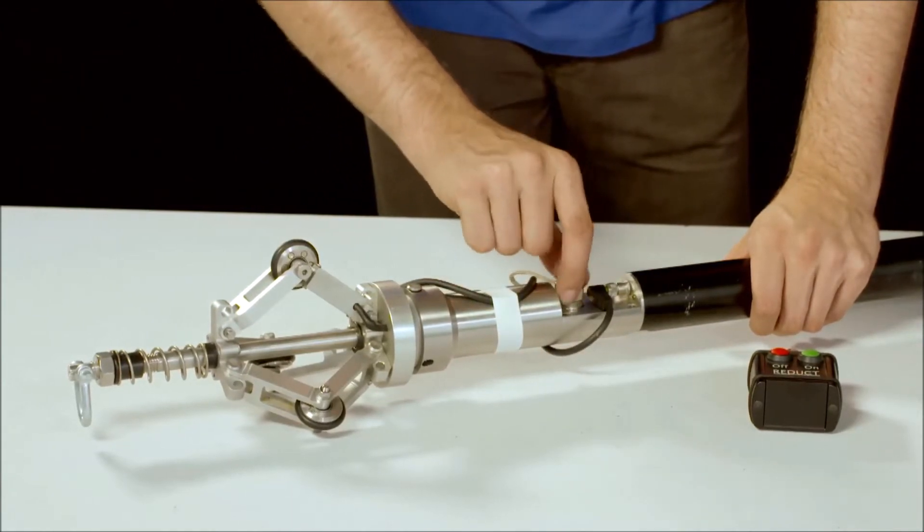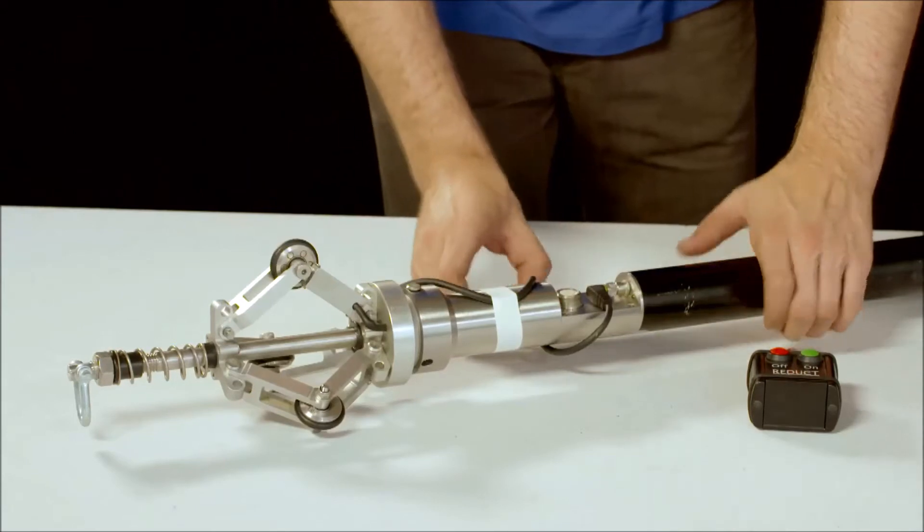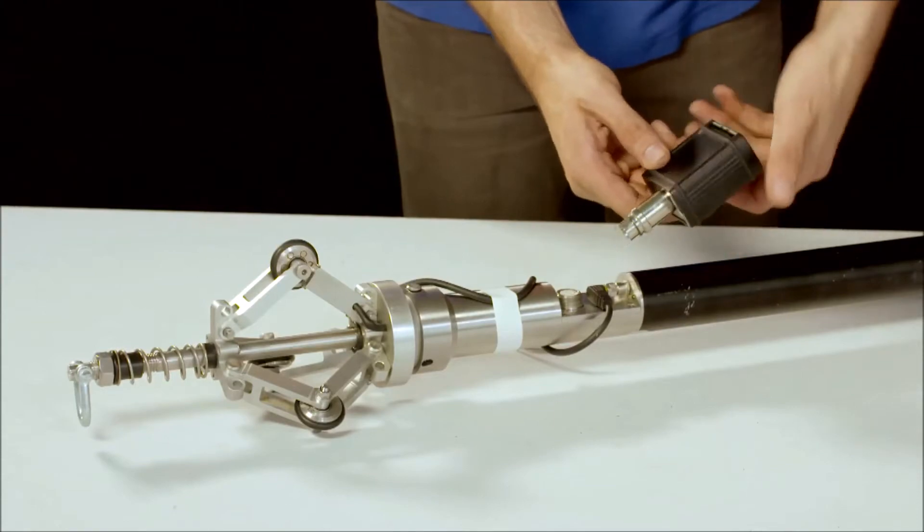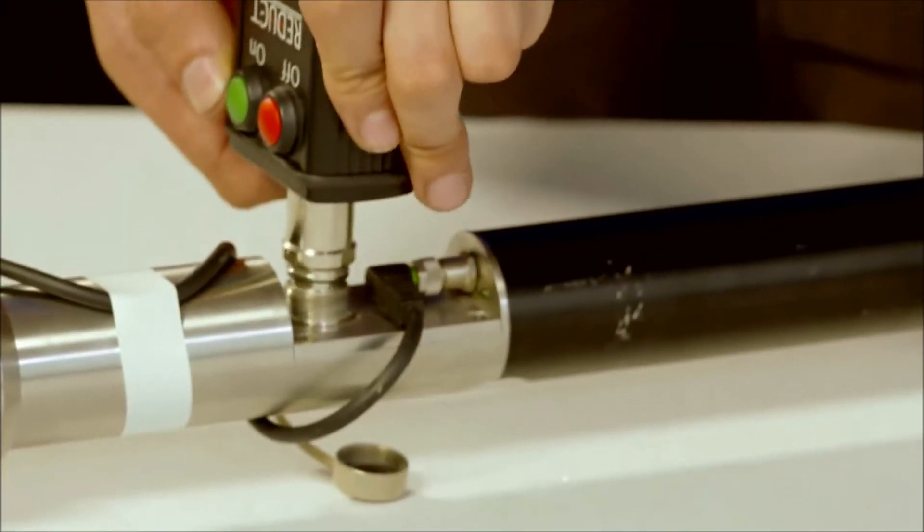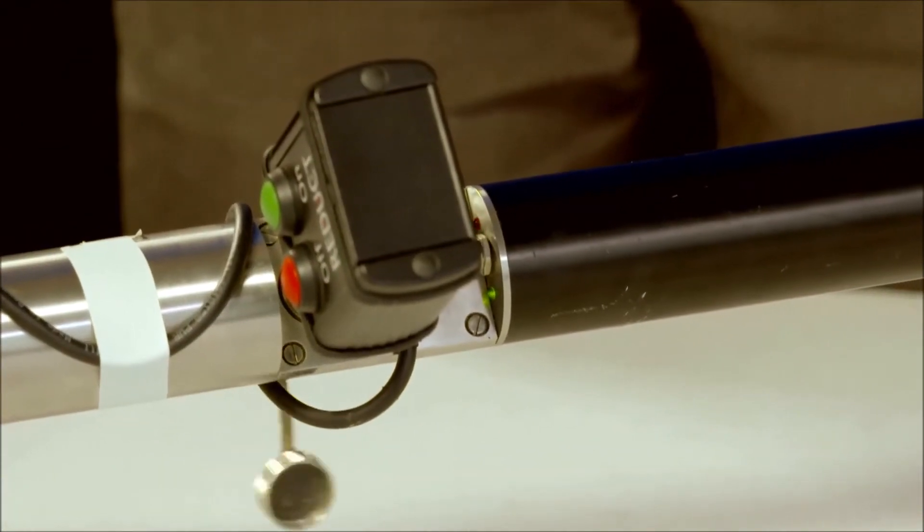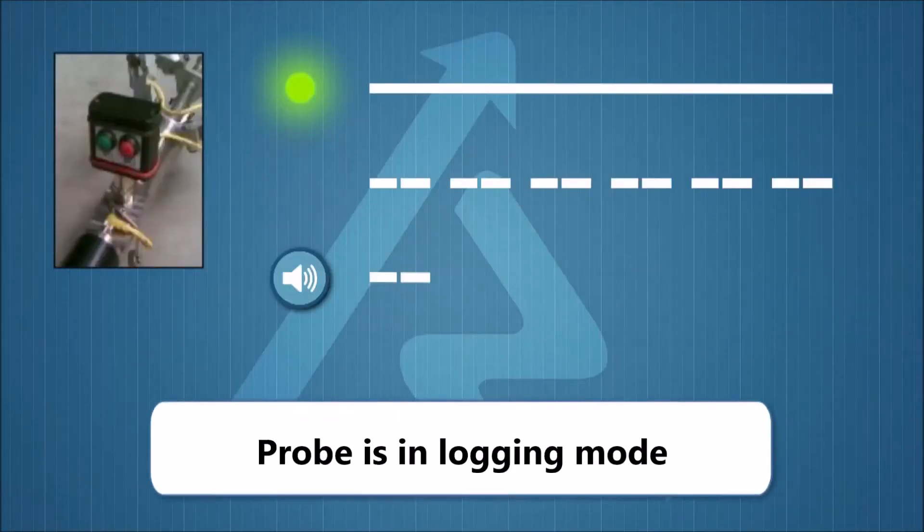To switch the probe on, remove the protective cap manually. Insert the control unit and press the on button. If, after switching the probe on, you hear two beeps, the green LED is on continuously, and the red LED flashes twice intermittently, the probe is in logging mode and ready to map.